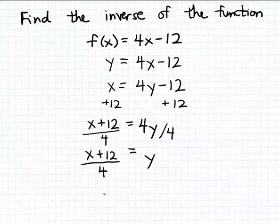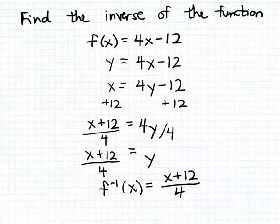Recall if the name of our original function is f, then we'll use f with a superscript of -1 to represent the inverse function. You read this as f inverse, not f to the minus 1 power. So f inverse of x, the formula for that inverse function is (x + 12)/4.